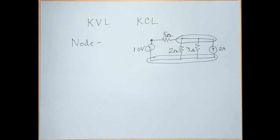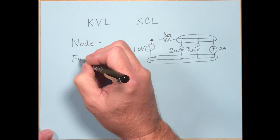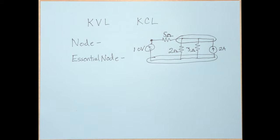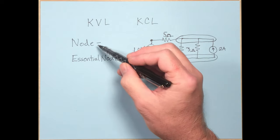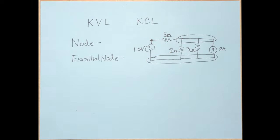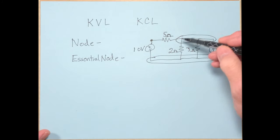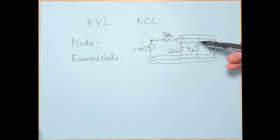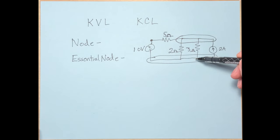That brings up the concept of an essential node. An essential node is where three or more elements are connected. So a node is two or more, while an essential node is three or more. In this circuit, there are three total nodes, but two of them — the one at the top and one at the bottom — are essential nodes.